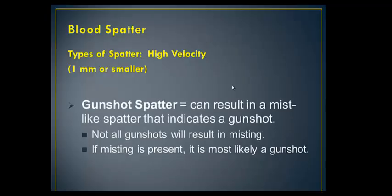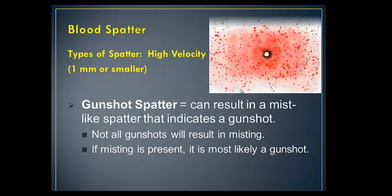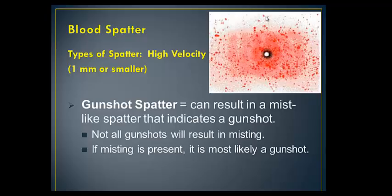I mentioned earlier that we have high, low, and medium velocity. Based on this knowledge, anything that's one millimeter or smaller they can attribute to gunshot spatter. So this is an actual bullet hole, and you can see very small, kind of a misting effect. They would associate that with some kind of gunshot.